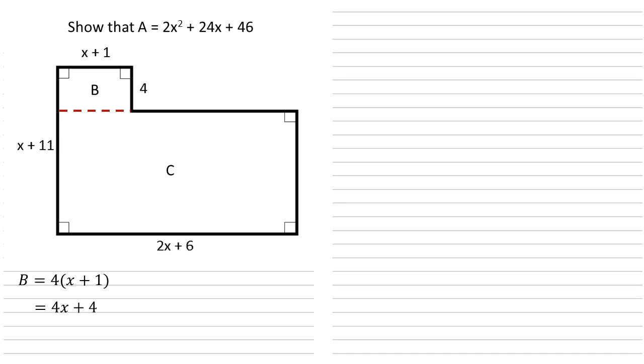Now C is a little bit trickier. We've got a length of 2x plus 6 along the bottom there but we don't know how high it is. But looking at our diagram carefully we can see that the height of the whole shape is x plus 11 and the height of B is 4. So C must be this whole x plus 11 take away the 4 from rectangle B which leaves us with a height of x plus 7 which we'll put on there.